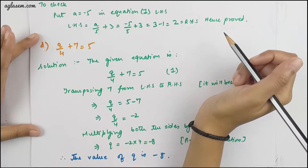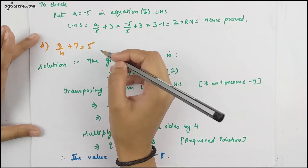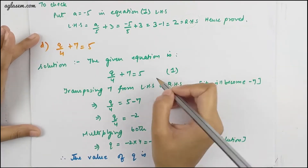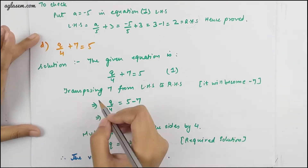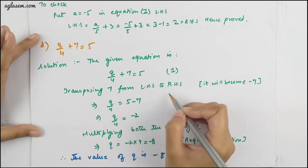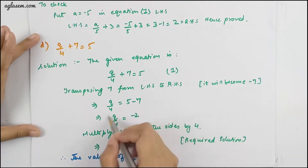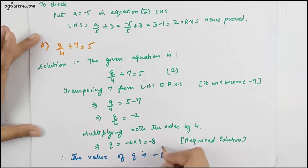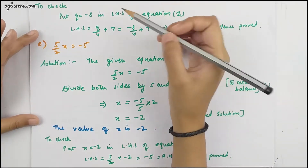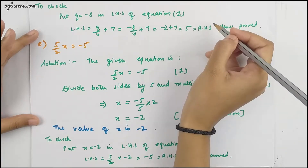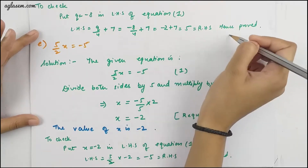The D part is q/4 + 7 = 5. Transposing 7 from LHS to RHS, we get the value of q = −8. Therefore the value of q is −8. To check, put q = −8 into the given equation — that equals the RHS. Hence proved.